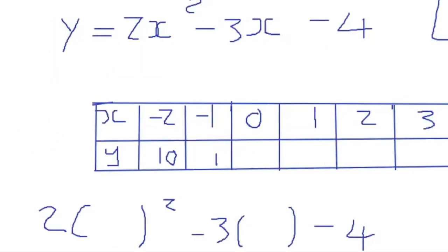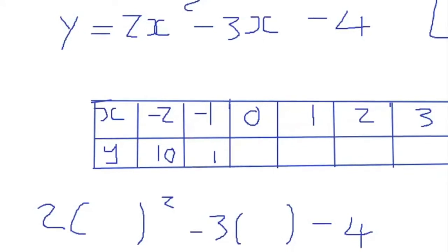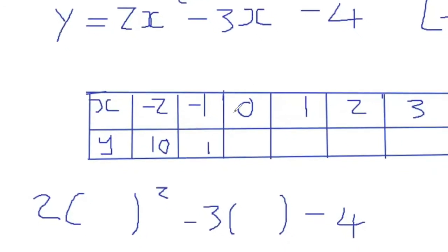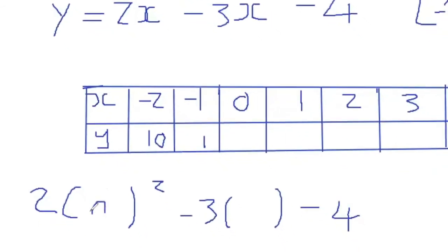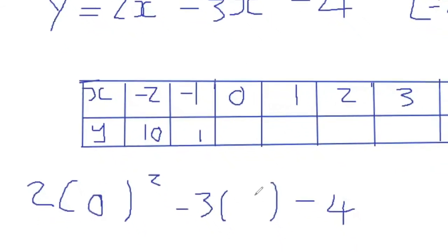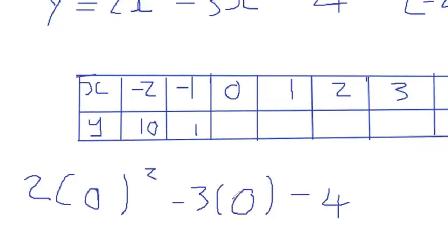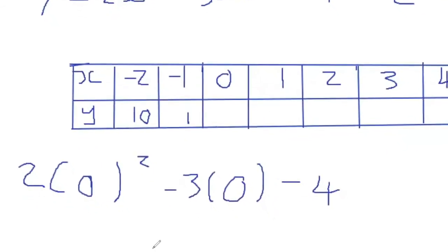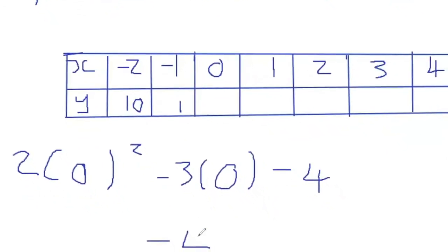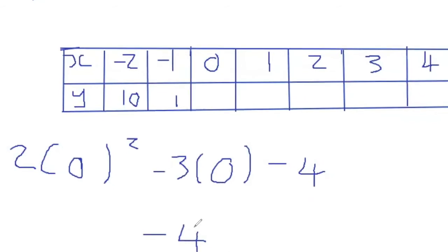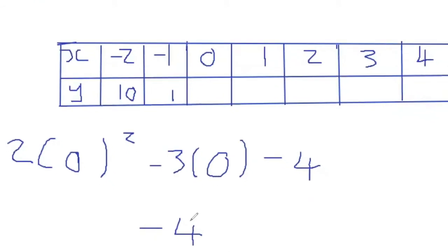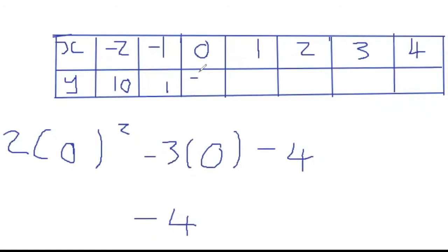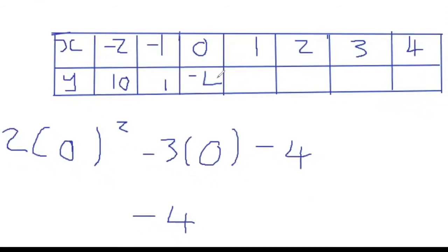Now we're going to substitute x equals 0, replacing x squared and x with 0. Zero doesn't affect the other terms, so eventually what we have is negative 4 for when x is 0.